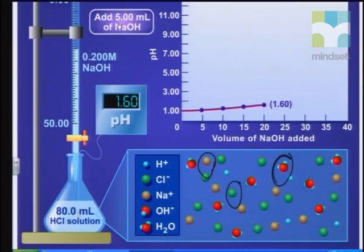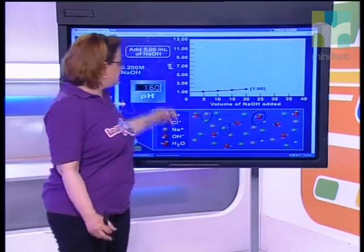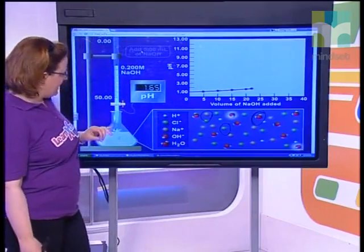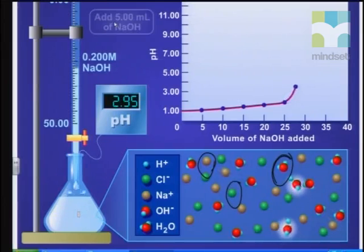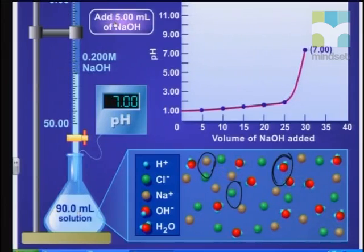I really like the animation because it shows the little droplets. We haven't actually added that much NaOH yet — well, we have. We've added 20 milliliters, and we still haven't seen too much of a change. Watch what happens as we get to 25 mils — there's quite a big increase. Between 25 and 30 mils, there's a sharp increase in pH.